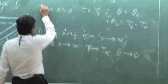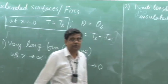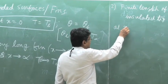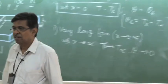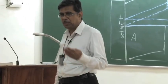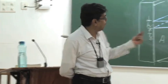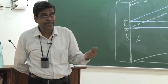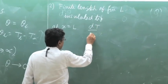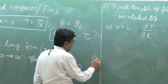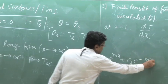What is the second boundary condition in this case? At x equal to L, if it is insulated — no heat transfer — then minus k dT/dx equals 0, which means dT/dx equals 0. We have to solve the equation theta equals c1 e^(mx) plus c2 e^(-mx), and this insulated condition means dT/dx at x equal to L is 0.